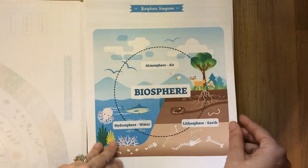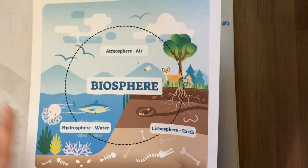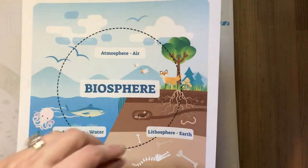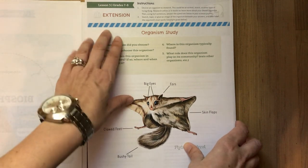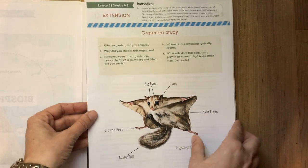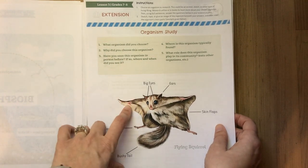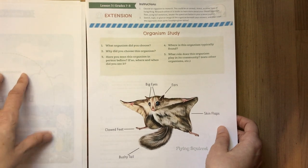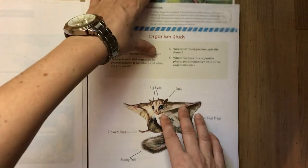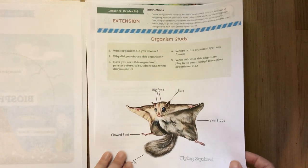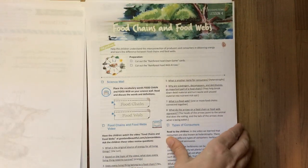They're also redoing their math and I hope they move towards a more bold and updated version for that too. The grade seven and eight extension is an organism study. I think a really fun addition for older kids — and maybe even the little ones — would be to order some owl pellets online and dissect them; I remember doing that in sixth and seventh grade.